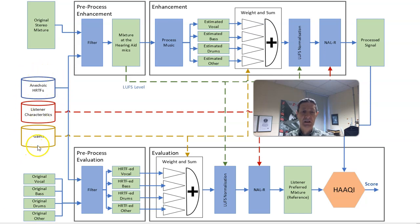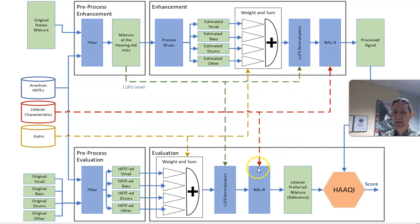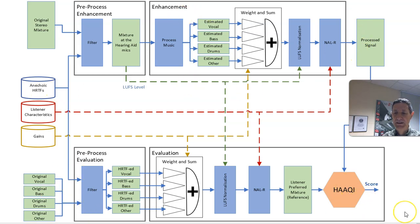The inputs to the system include the desired gains and the listener characteristics, which are audiograms. Our website has lots of background on what an audiogram is if you're not familiar — basically it tells you how good the listener's hearing is. It's needed for the hearing aid amplification, and you could fit it into your process earlier if you find a use for it. Anechoic HRTFs (head-related transfer functions) are used to propagate sound from the loudspeaker to the hearing aid. You modify the enhancement block and leave the evaluation block as is. At the evaluation stage, you'll be given the mixture at the hearing aids, the listener characteristics, and the desired gains — you won't have access to the full stem data.